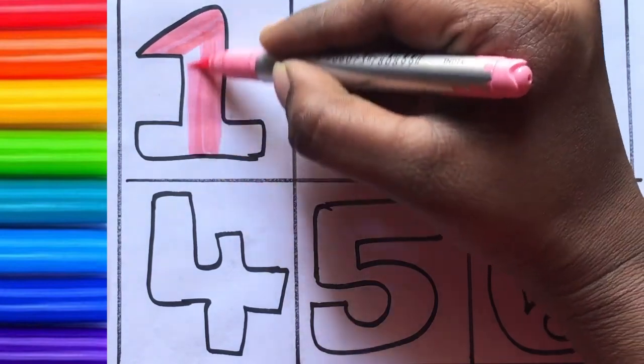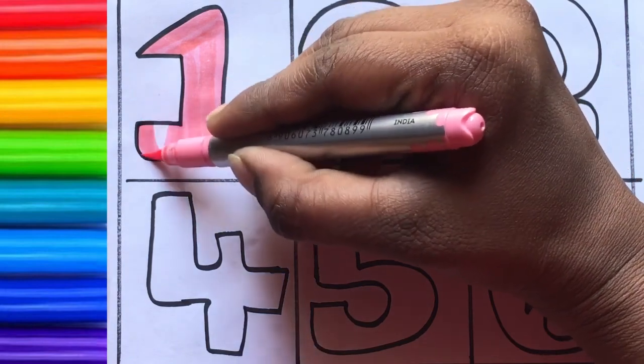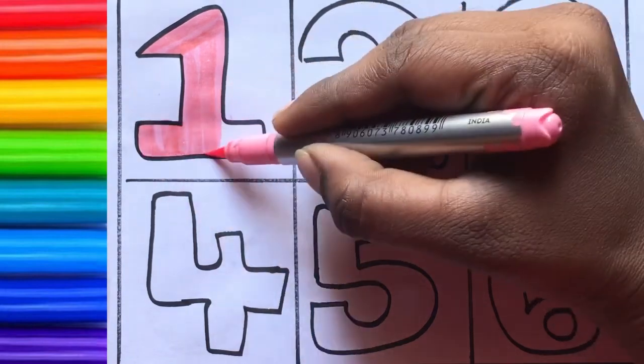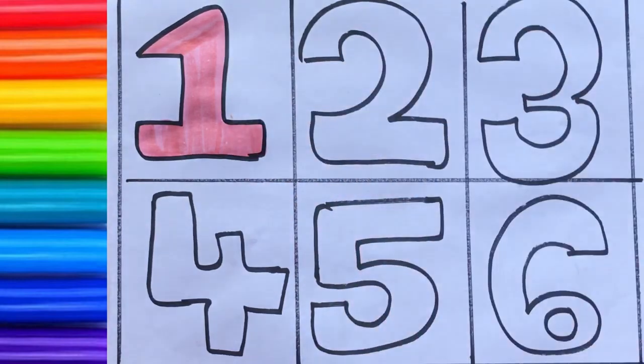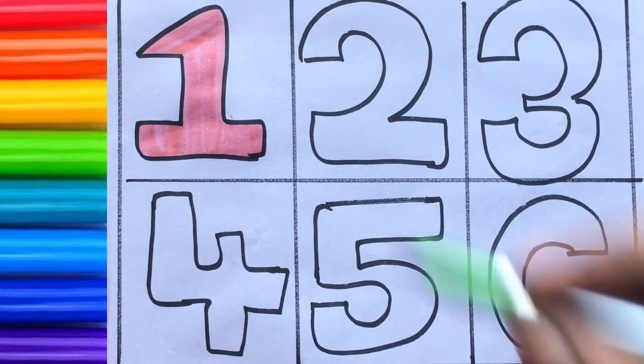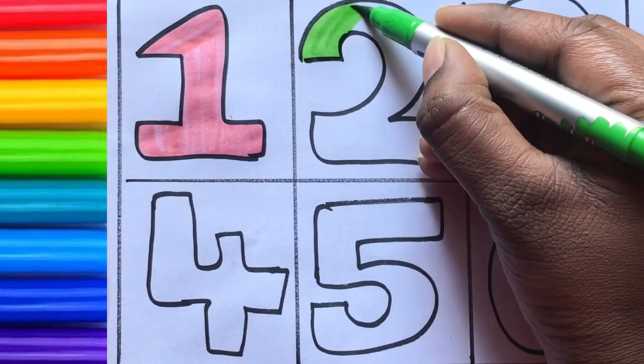Number one, one, one, one, one, one, one. Green color, two, two, two, two, two, two.